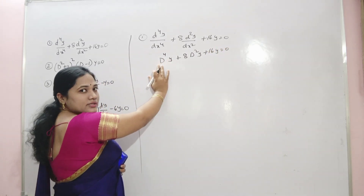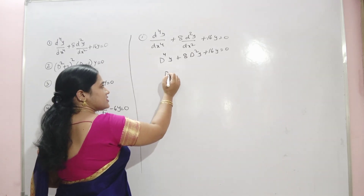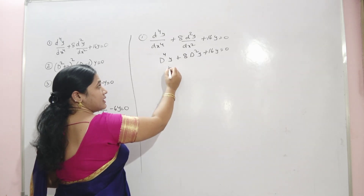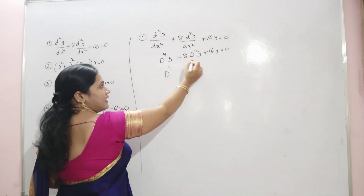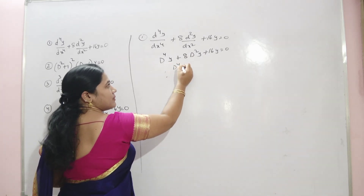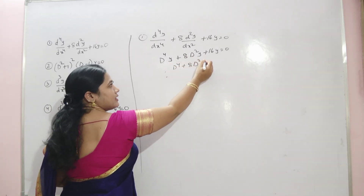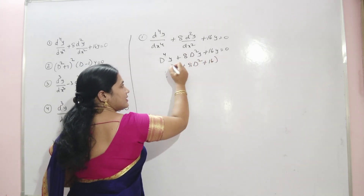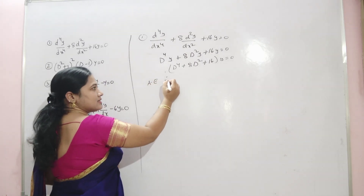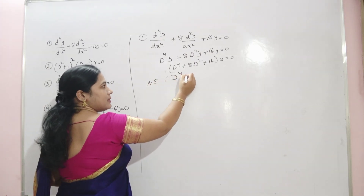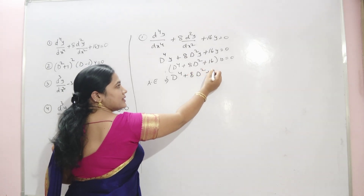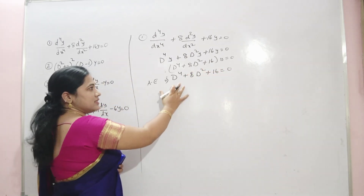Then write its auxiliary equation. The auxiliary equation is D⁴ + 8D² + 16 = 0.